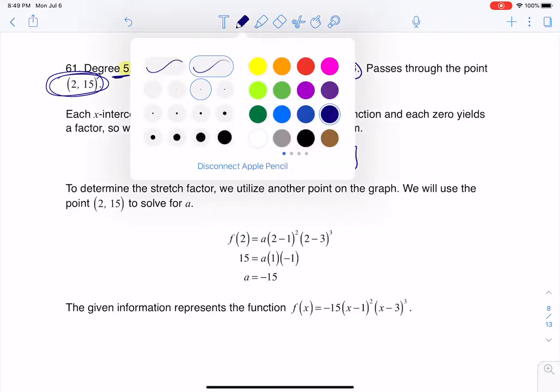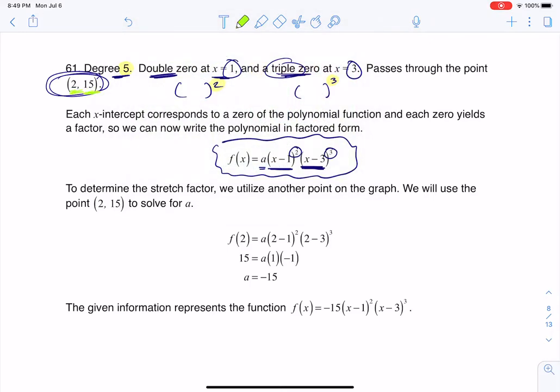All right, so then what I want to do is I want to take 2 and 15 and plug them in for x and y respectively. So I'm going to put a 2 in here and a 2 in here and a 15 in here. And then the only thing I'll have left to solve for is a, and that's all that's missing in this whole equation.